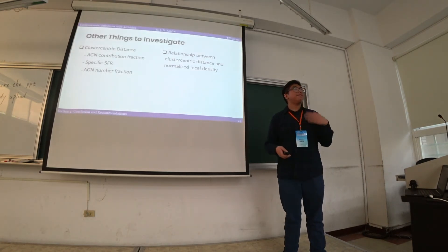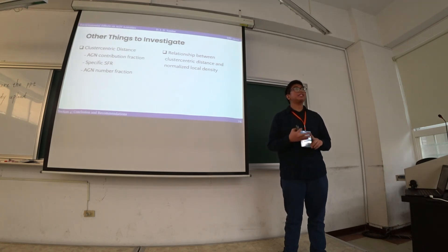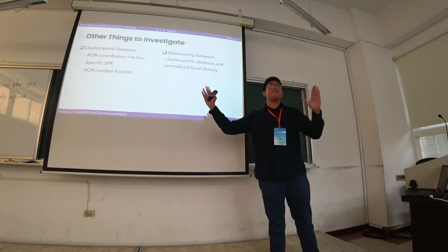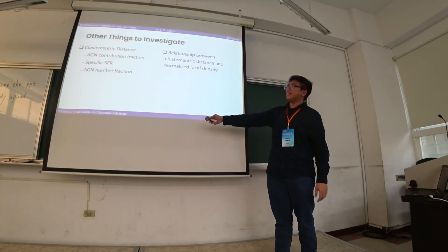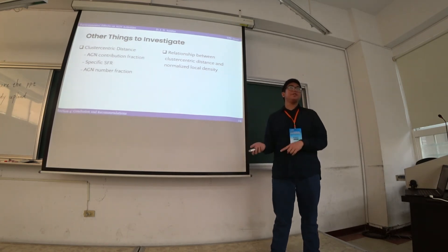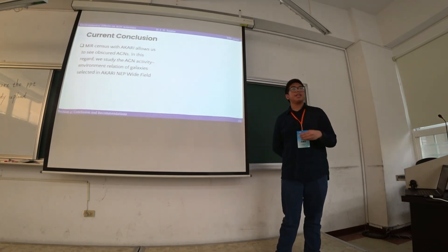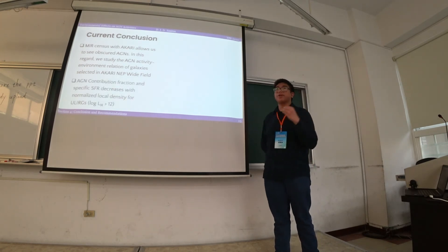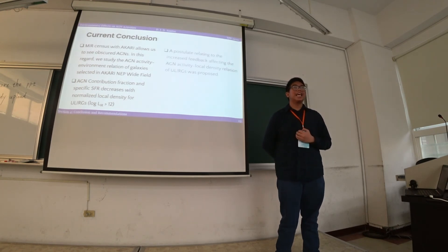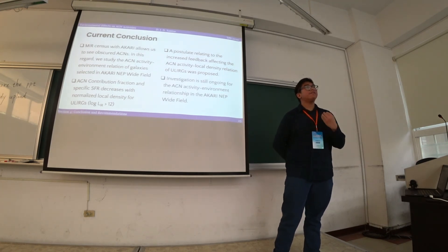This is ongoing research and I still have a lot of things to do. I still have to make use of another description for environment called cluster-centric distance — the distance of the galaxy from its nearest cluster center — and examine the relationship between normalized local density and this new measure. To summarize: I exploited the advantage of the mid-infrared census to look at the AGN activity–environment relation in the AKARI NEP wide field. For ULIRGs, the AGN contribution fraction and specific star formation rate decrease with environment, and investigation is still ongoing.